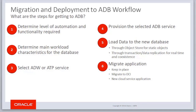Number one: determining the level of automation and functionality required. Number two: determine the main workload characteristics for the database. Number three: depending on the workload characteristics, select Autonomous Data Warehouse or Autonomous Transaction Processing service. Number four: provision the selected service. Number five: determine how to load data into the Autonomous Database. And number six: determine what to do with the application. Let's examine each of these considerations in more detail.